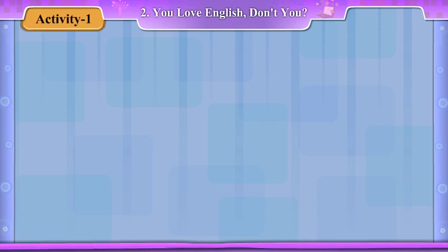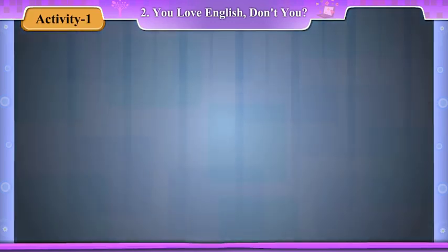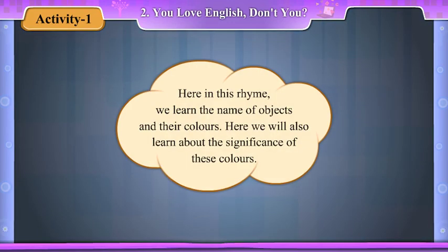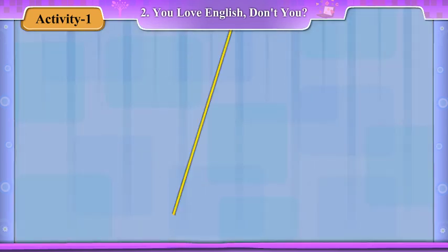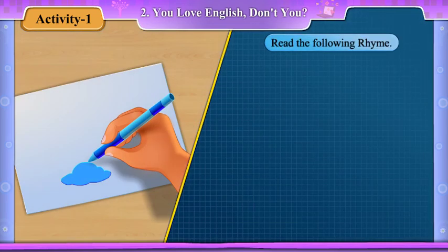Activity 1. Here, in this rhyme, we learn the name of objects and their colours. Here we will also learn about the significance of these colours. Read the following rhyme.